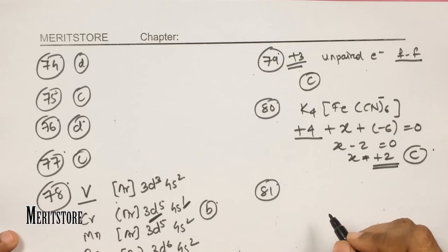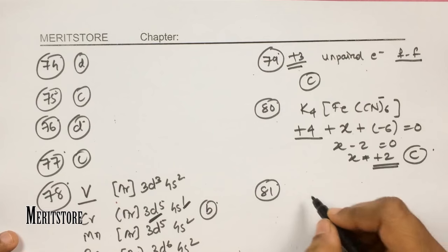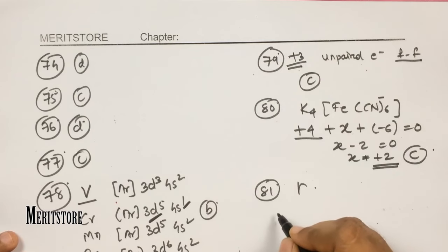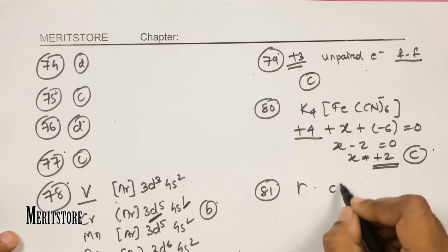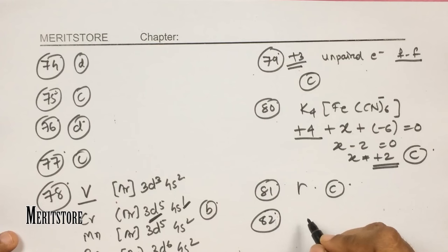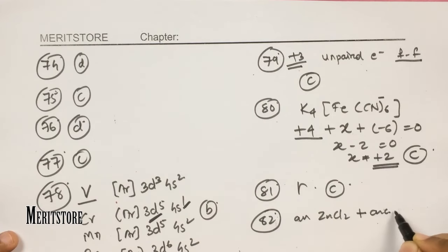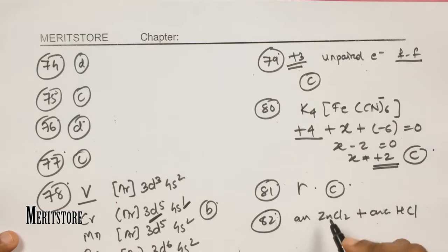Question number 81: which isomer of benzene hexachloride (BHC) is used as a strong pesticide? It is the gamma isomer, therefore option C. Question number 82: Lucas reagent is anhydrous ZnCl₂ with concentrated HCl. Option C.